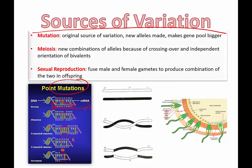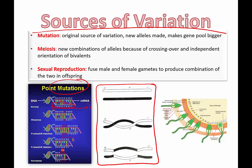In sexual reproduction, the production of gametes — sperm and egg cells — involves all kinds of bits and pieces that allow you to create new combinations. One of those is crossing over, which is illustrated here. Crossing over happens in prophase one of meiosis, which you should already be familiar with.